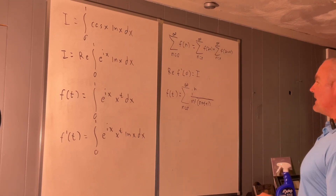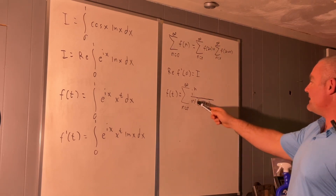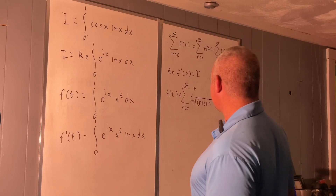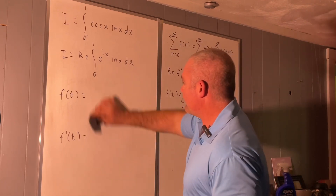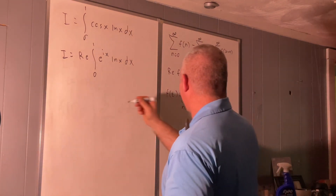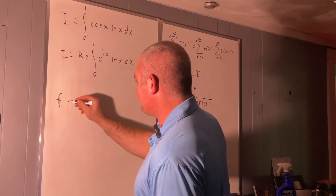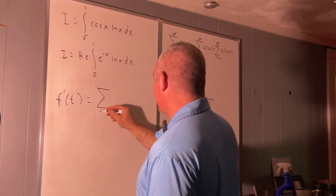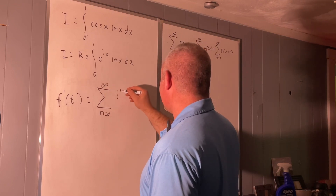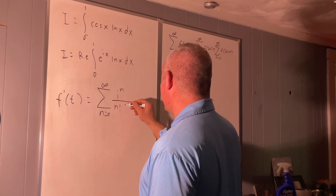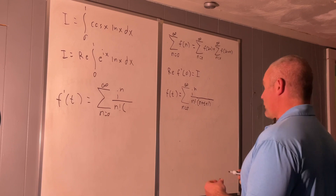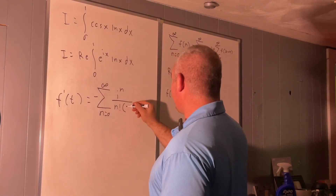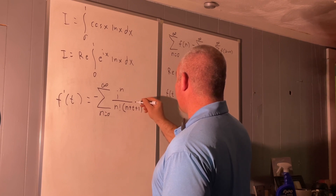From there, it's very easy to get f prime of t. Since the only thing that depends on t is 1 over n plus t plus 1, it'll be a very simple derivative to take with respect to t. So f prime of t is equal to the sum from n equals 0 to infinity of i to the n over n factorial times negative 1 over n plus t plus 1 all squared.